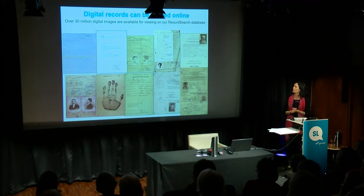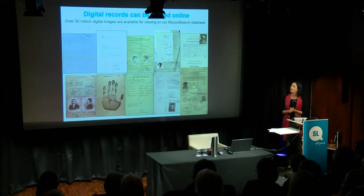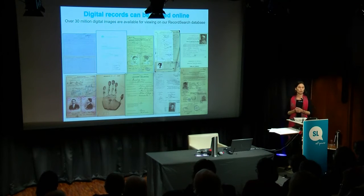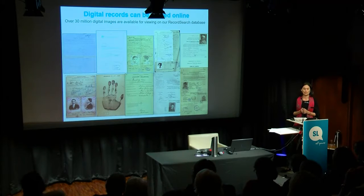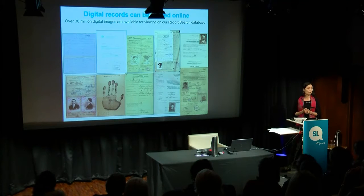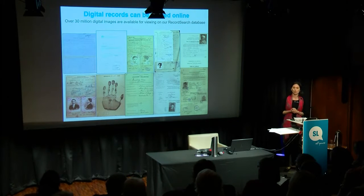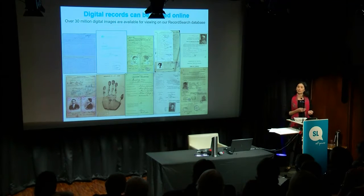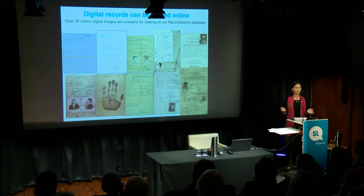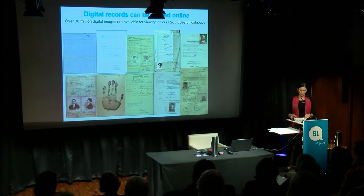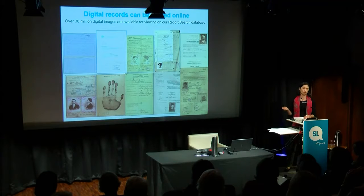This is what our immigration records look like. Today most people use our internet to look at our collection. Most of the records are listed on our online database RecordSearch, and many have been digitised and can be viewed online. For those records that are not yet digitised, you can choose to pay for them to be digitised and uploaded to our website, or you can go into one of our reading rooms and view them for free.